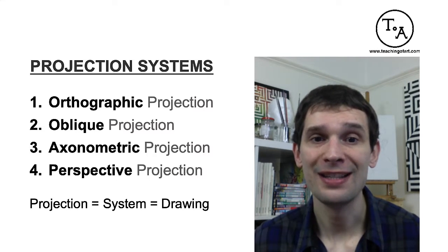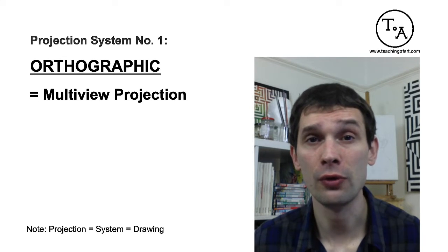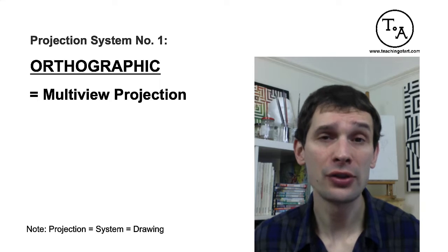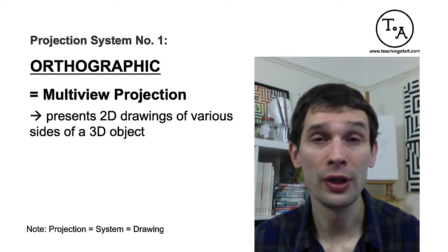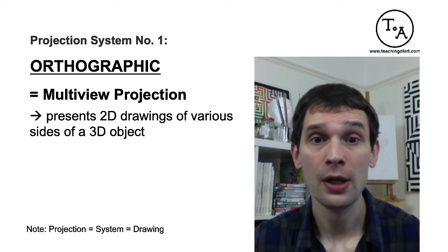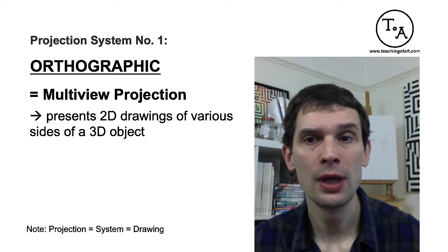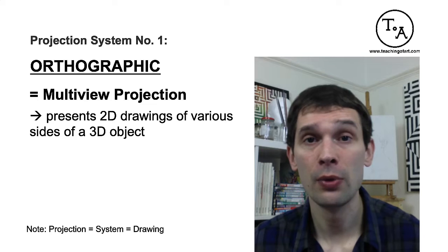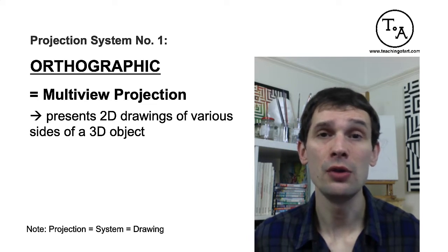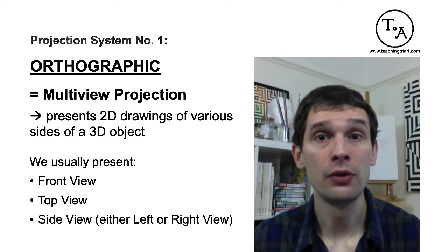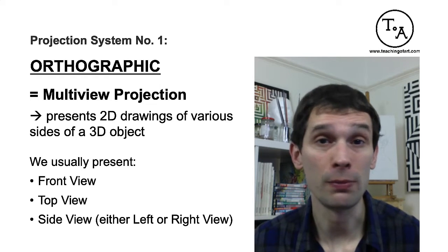Projection system number one is orthographic projection, also known as multi-view projection, which shows two-dimensional drawings of various sides of a 3D object. You can have a maximum of six sides: the front view, rear view, top view, bottom view, left view, and right view. In art, design, and architecture we are usually interested in displaying the front view, the top view, and the right or left view depending on what you are presenting.